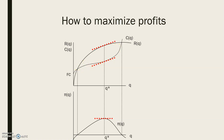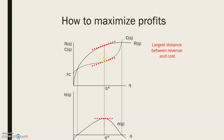We can easily see that there will be a point exactly here where the distance is maximum — the distance between the revenues and the cost is largest. At this point, we see that the slope of the revenues function is going to be equal to the slope of the total cost function. This means that at this point we will be maximizing the profits, because the difference between revenues and cost is maximum, and also because the marginal cost and the marginal revenue will be equal.